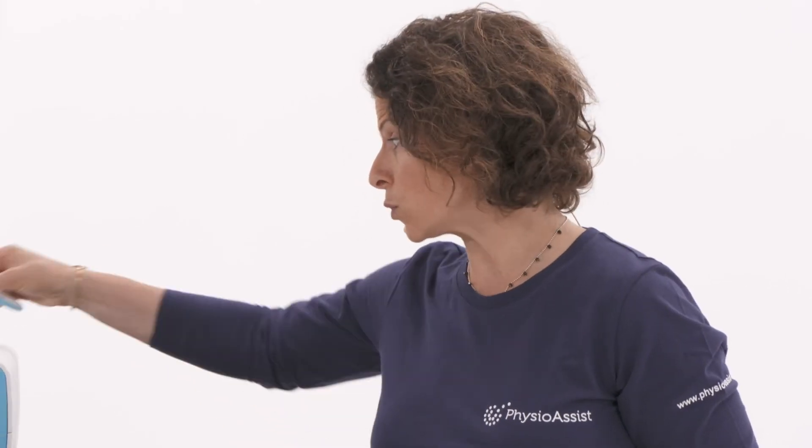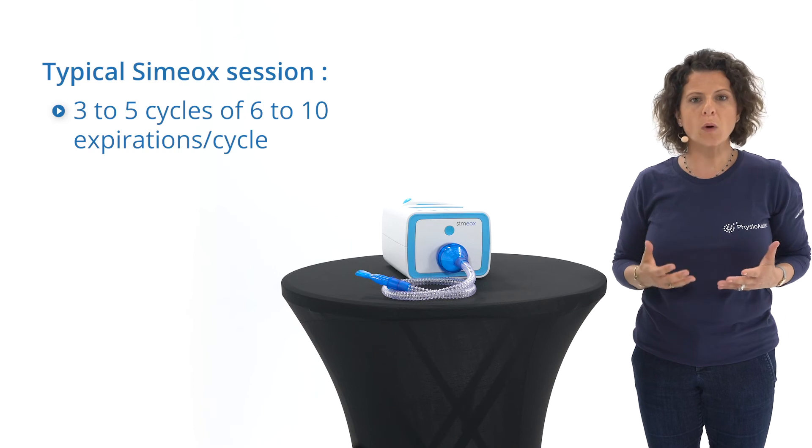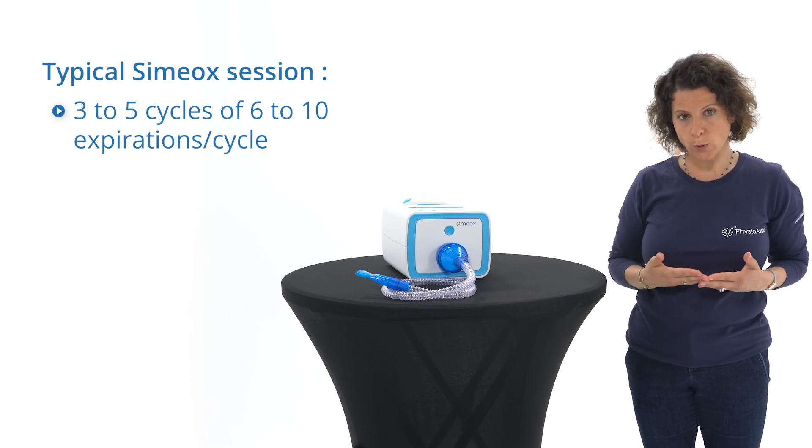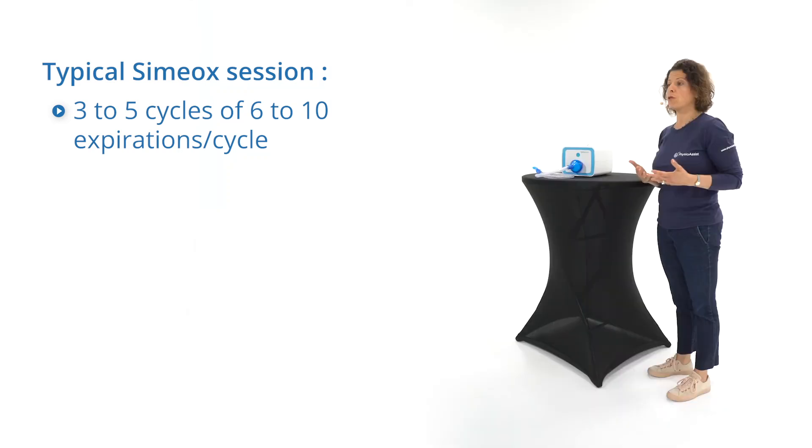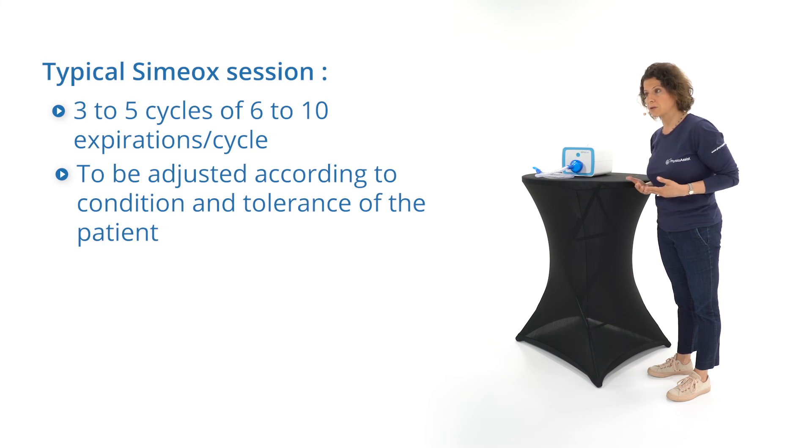A typical SEMIOX session consists of 3 to 5 cycles with 6 to 10 expirations per cycle with a 45-second pause between each cycle. The number of cycles and expirations has to be adapted depending on the need and the medical condition of the patient.